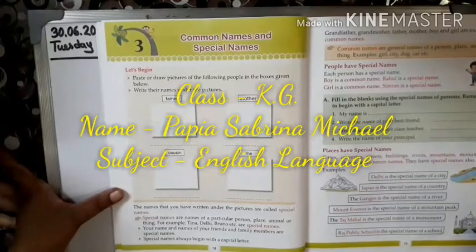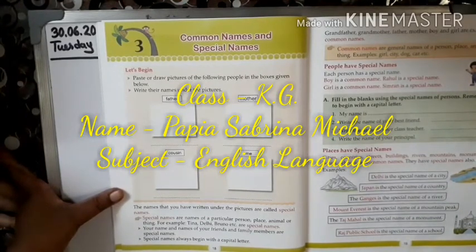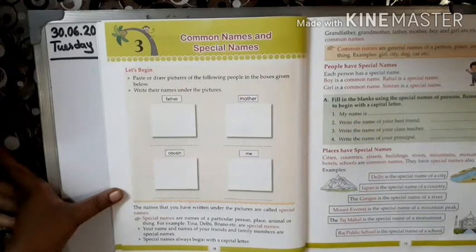Hi, good morning. How are you, my children? I hope you all are doing fine in this lockdown. Today we are going to study English language. So let's start. Children, take out page number 18, chapter 3: common names and special names.